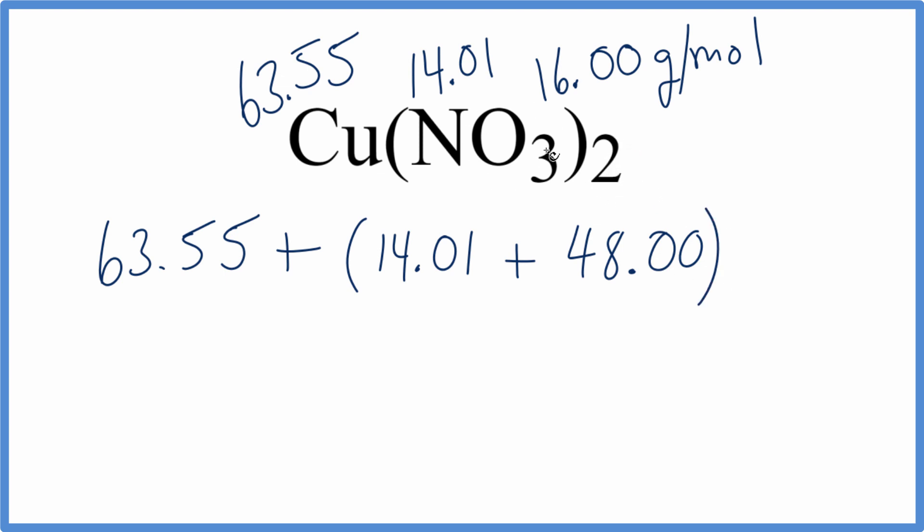The 2 is going to multiply by everything here, so we'll put a 2. When we add these numbers up, we'll take 14.01 plus 48.00, add them together, multiply that by 2, and then add it to the 63.55.